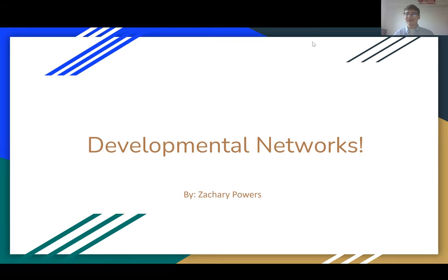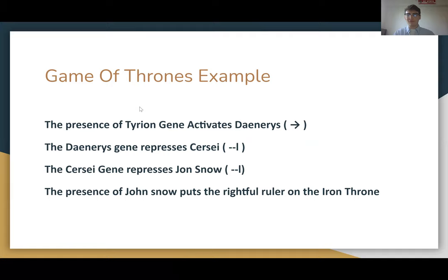Hello and welcome to my Genetics 311 Module 6 exam video. Today we're going to be talking about developmental networks, and we're going to be using a Game of Thrones example. For our example today we're going to have four characters — Tyrion, Daenerys, Cersei, and Jon Snow — and they're going to have a relationship that determines who ends up on the Iron Throne.